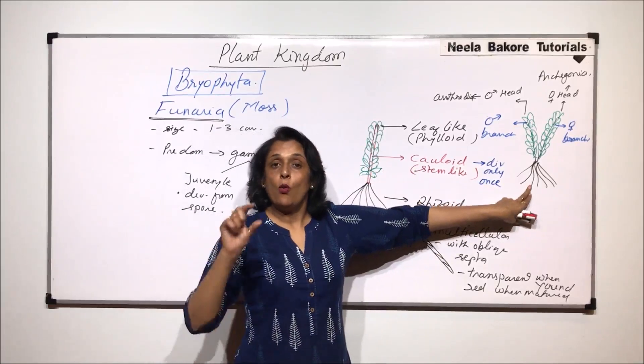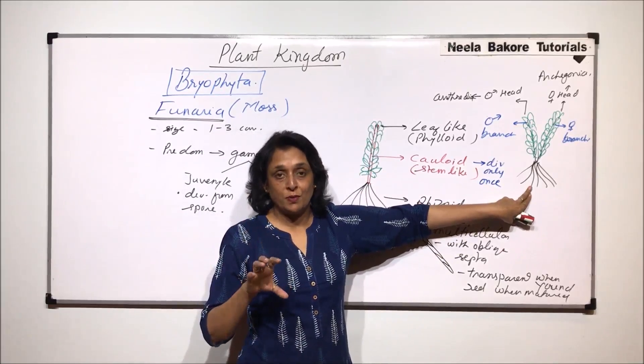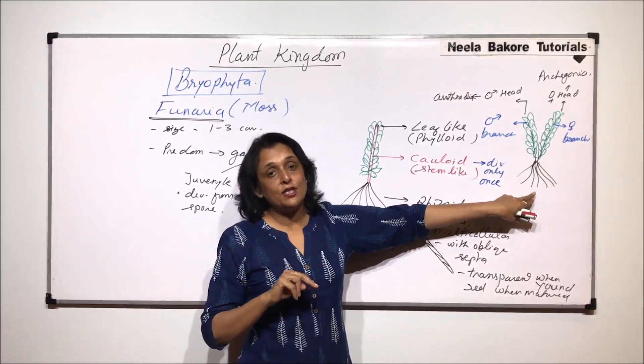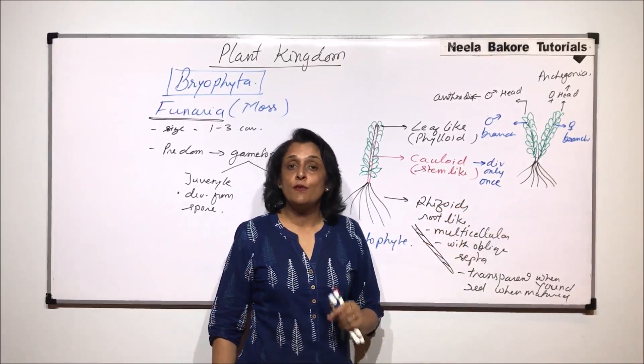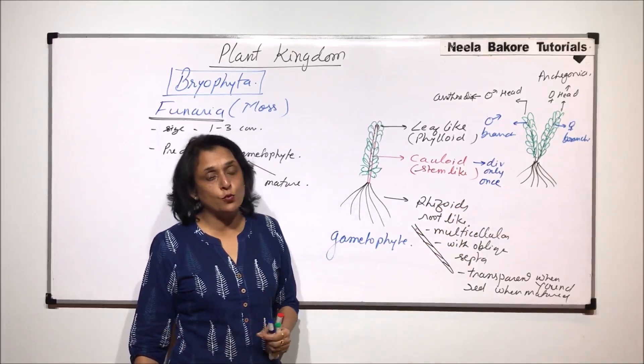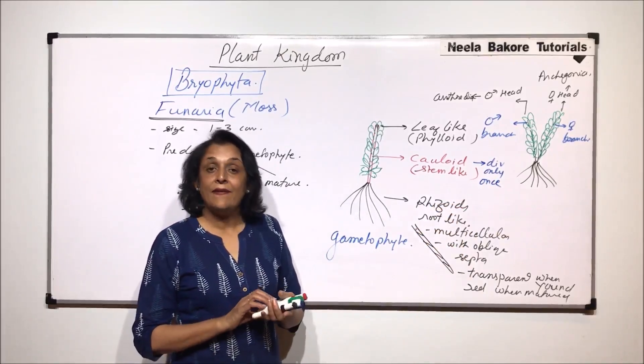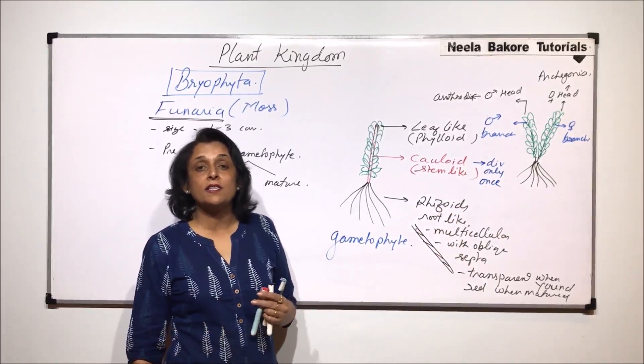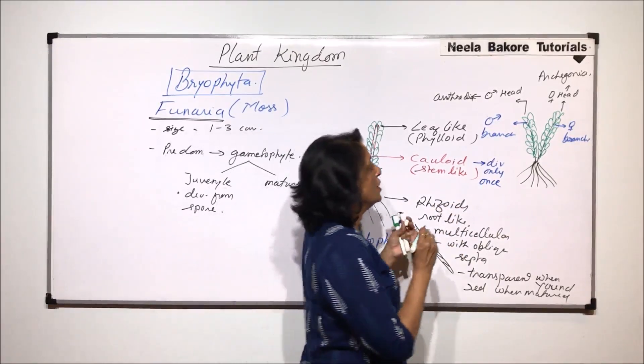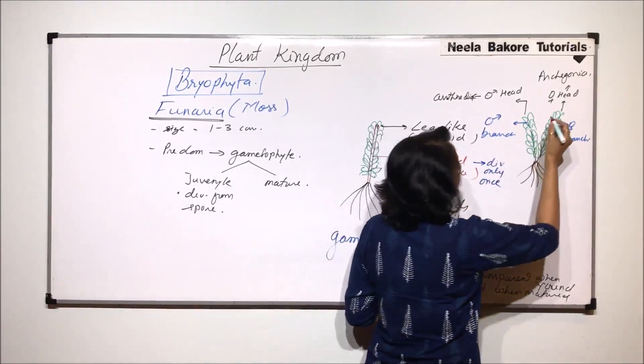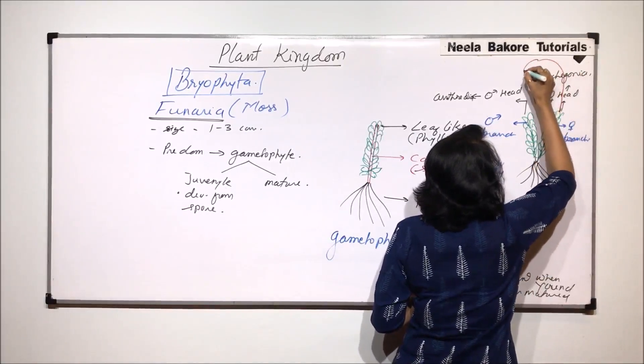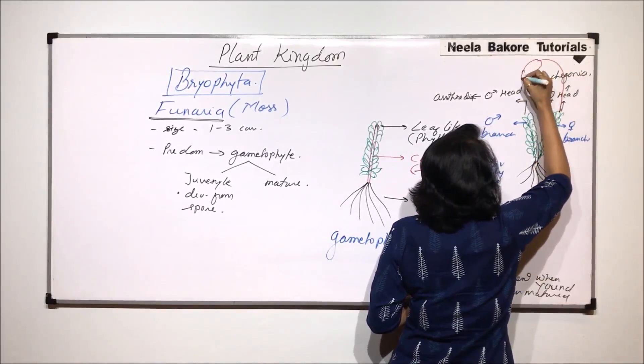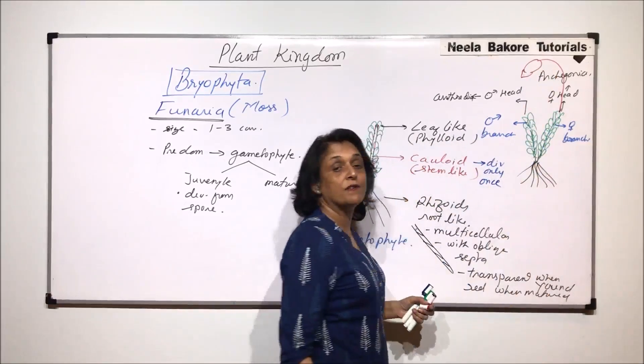This is when only the gametophyte is visible. But if gametes are produced, fertilization has taken place then we would find a sporophyte which would develop. And the sporophyte always develops on the female branch. So in that case what we will see is here a thread-like structure and at the tip there is a capsular structure which develops.